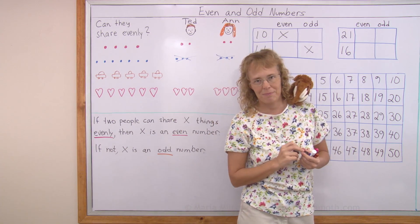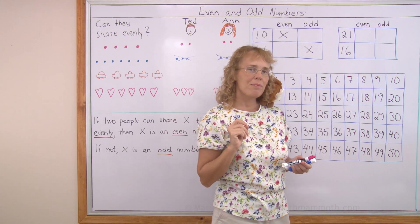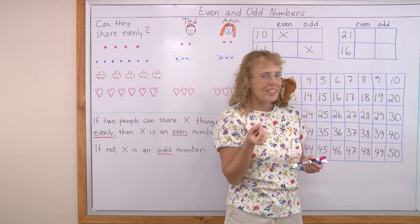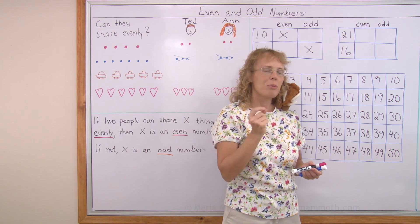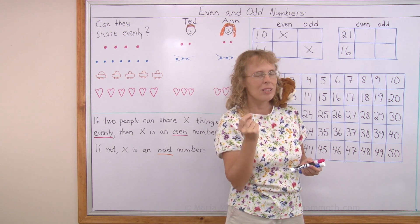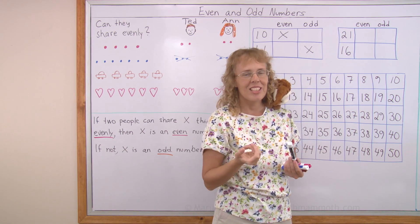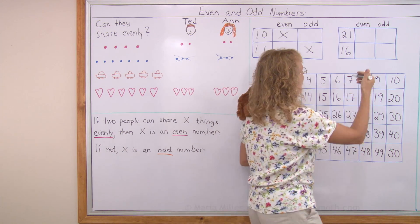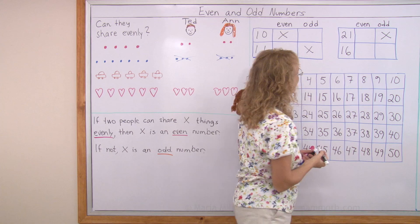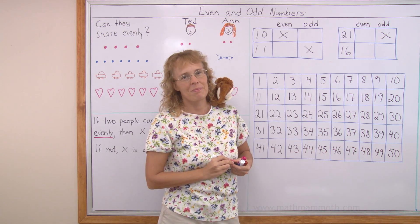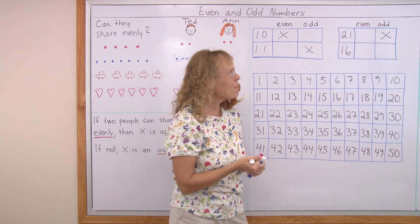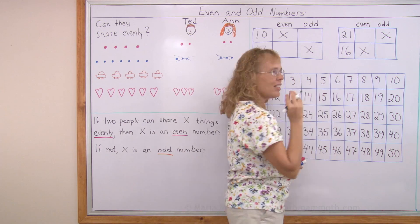How about twenty-one? Is it an even or odd number? Twenty, you can share evenly, right? It would be ten and ten. But twenty-one, again, you cannot. It would have one left over. So, it's an odd number. And then sixteen. It's an even number, because you would have eight and eight.